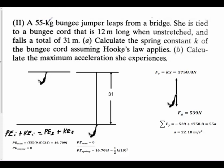Here I have a 55 kilogram bungee jumper that leaps from a bridge. She is tied to a bungee cord that is 12 meters long when unstretched and falls a total of 31 meters. That means immediately that the bungee cord has stretched at the bottom 31 minus 12 is 19. The cord itself has stretched by 19 meters.